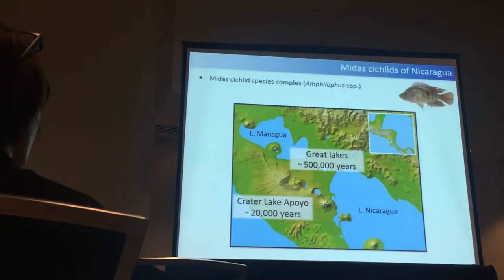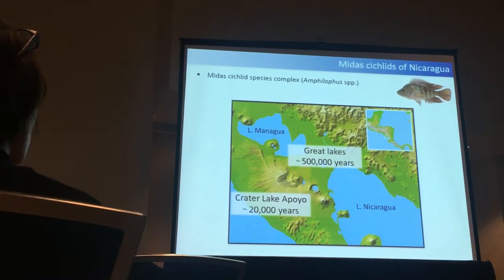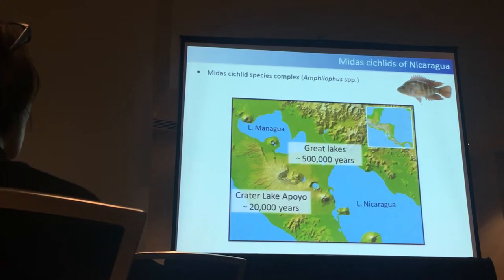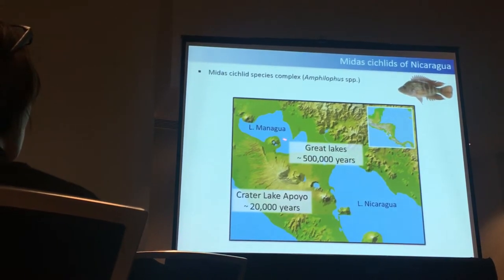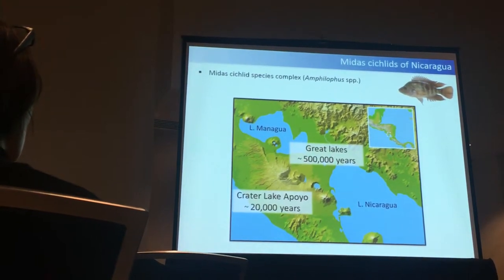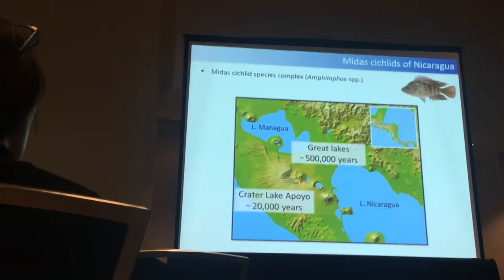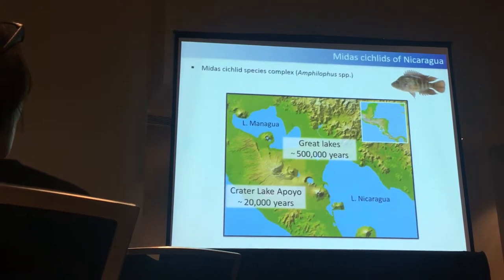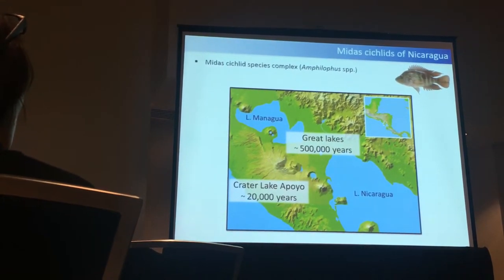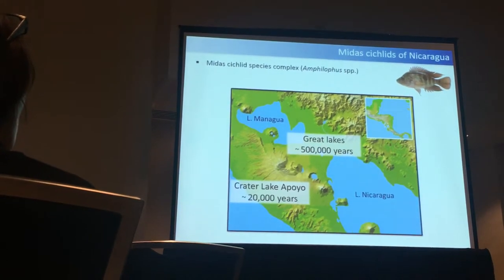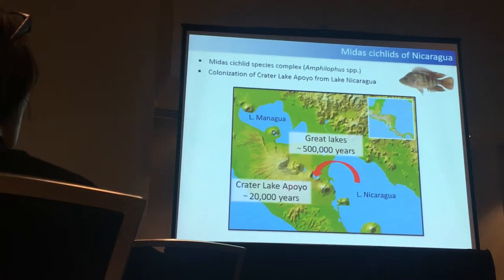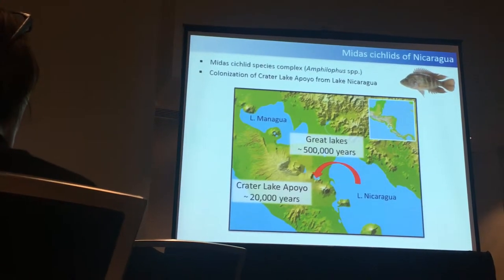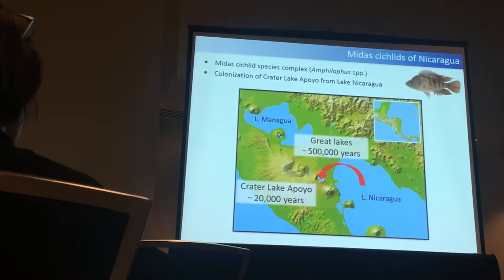Our study system is the Midas cichlids from Nicaragua in Central America. These fish live in the lakes of Nicaragua — two great lakes, Lake Nicaragua and Lake Managua, which are quite old, around 500,000 years — but there are also several small and very young crater lakes. The oldest is crater lake Apoyo. I will focus on two species: one from Lake Nicaragua and one from Lake Apoyo, which was colonized from Lake Nicaragua. After this colonization event, those fish diverged and speciated.